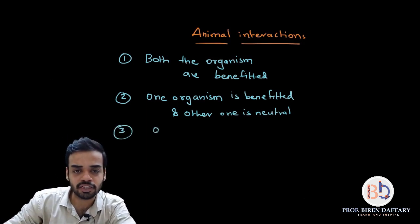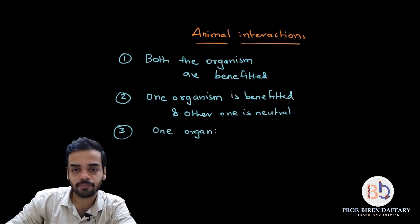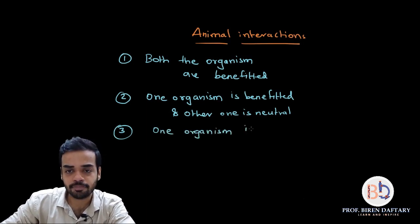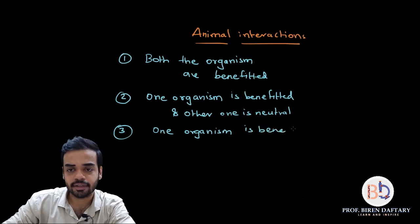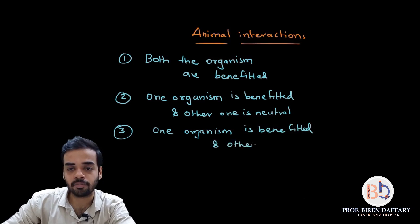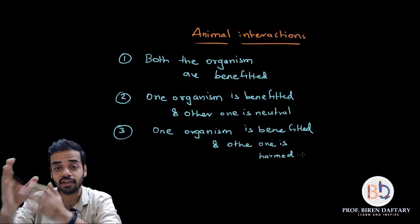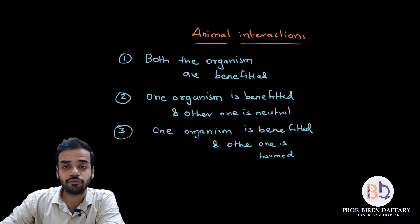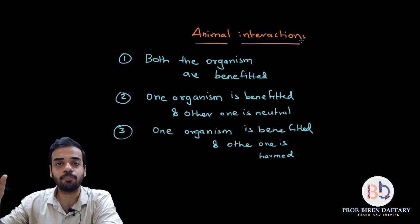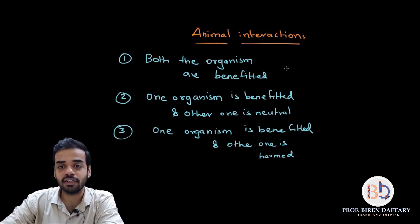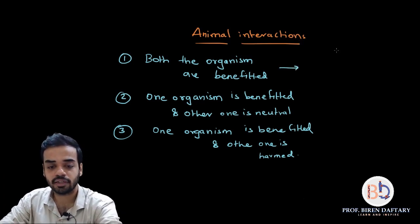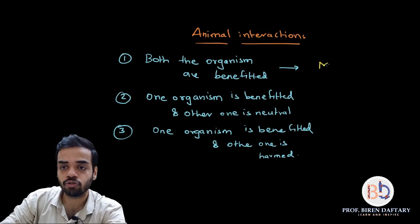The third type of interaction is one in which one organism is benefited and the other one is harmed. So here, for the first time, we see that because of the interaction one gets the benefit while the other is harmed. The first category — where both organisms are benefited — is called mutualism.